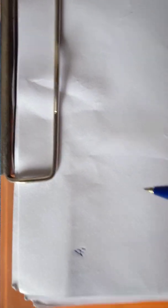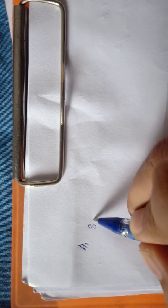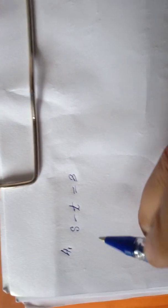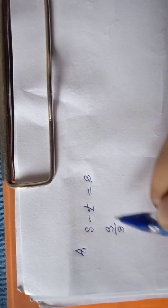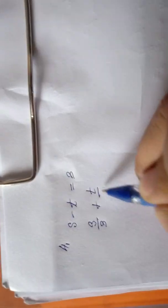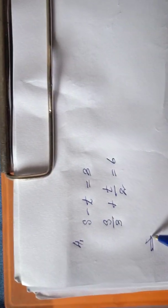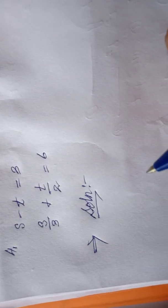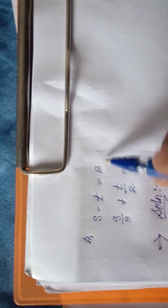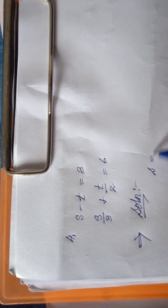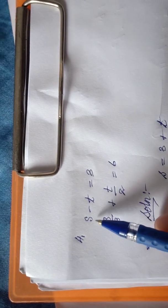For question number four we have: s minus d equal to three — this is a simple one. And in the second part we have a fraction: s by three plus d by two equal to six. I will take the first equation and make it s equal to three plus d — this will be equation one.